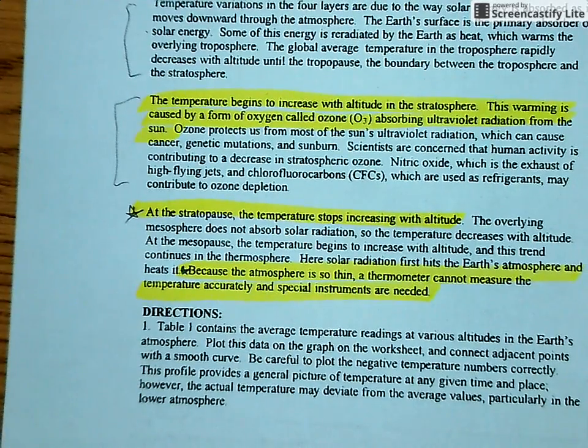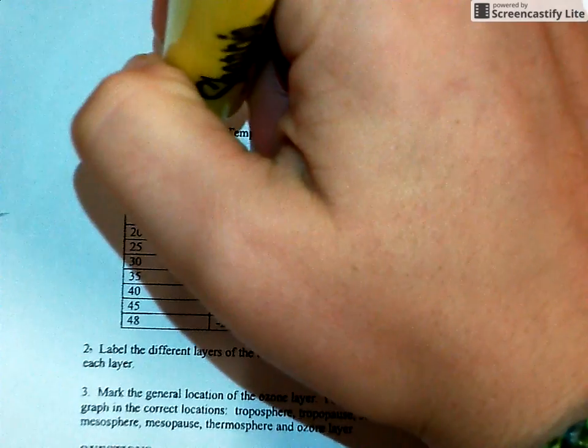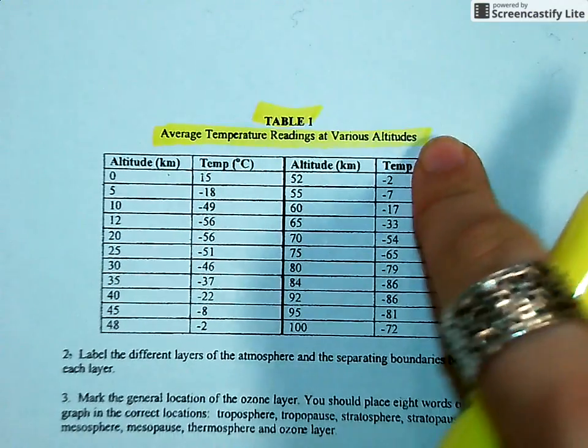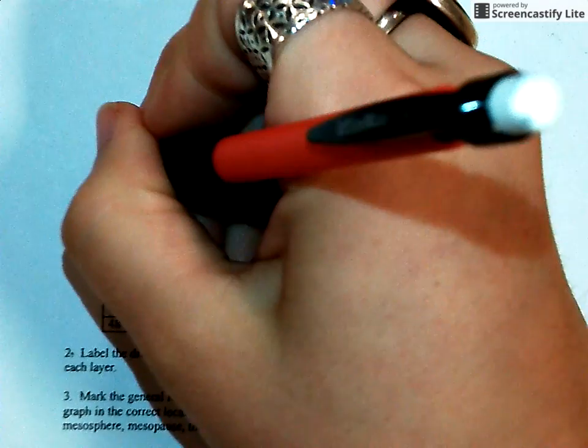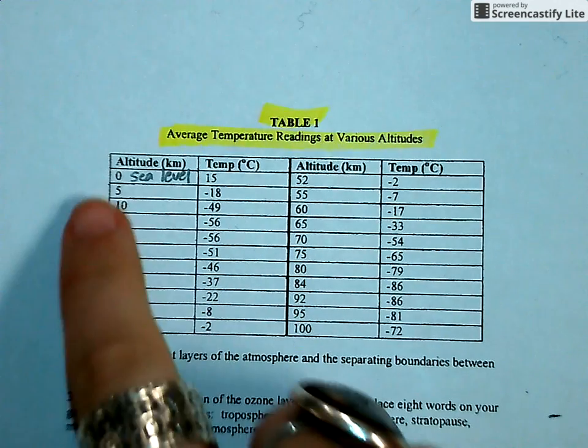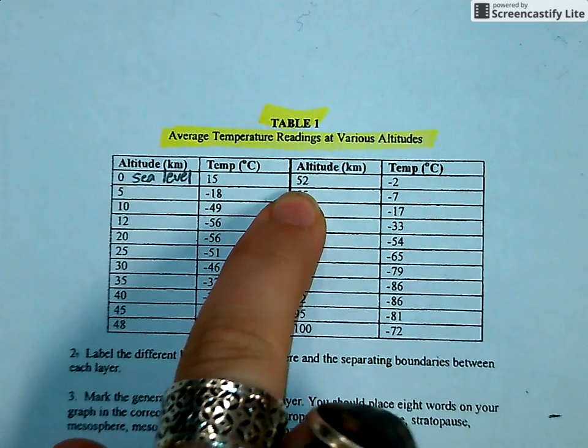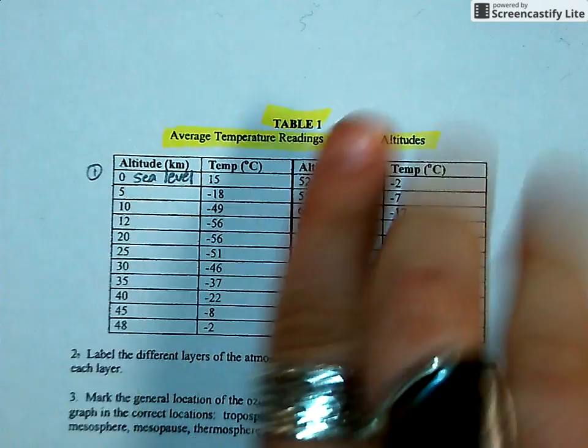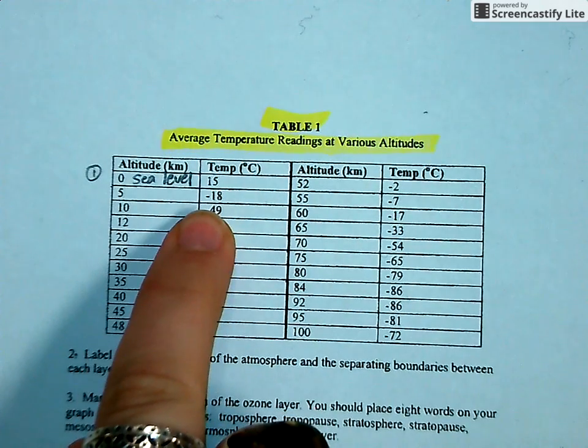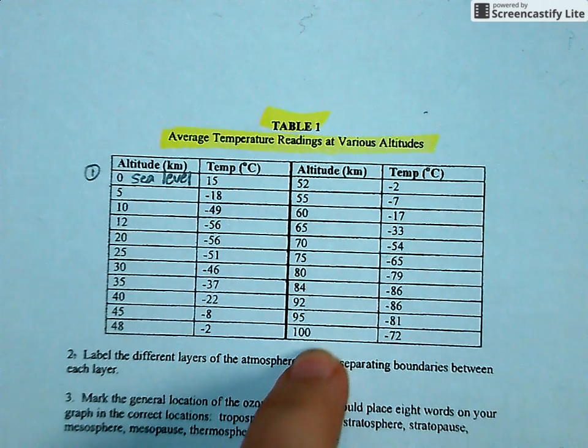But here, I'm going to go to the directions. So the directions say, this is for the graphing. Table 1, so where's table 1? Table 1 is right here. So that's a table of information, some data. So this is actual average temperature readings at various altitudes. So what does zero altitude mean? It means we're at sea level. We're right at zero, so we're at the bottom, we're at the troposphere. And so at zero altitude, it says that the temperature was 15 degrees Celsius. So zero, then at five kilometers, it's actually negative 18. So this goes all the way up to 48, and then continues right here, the 52, and all the way to 100 kilometers.